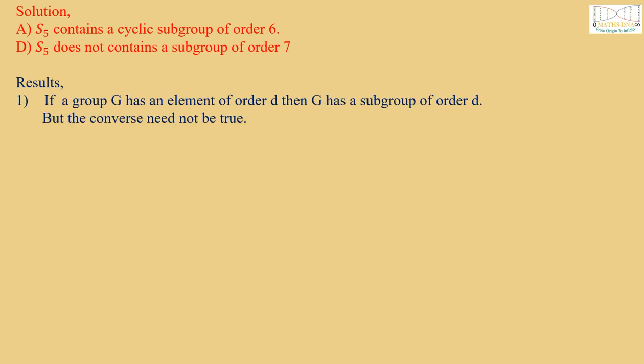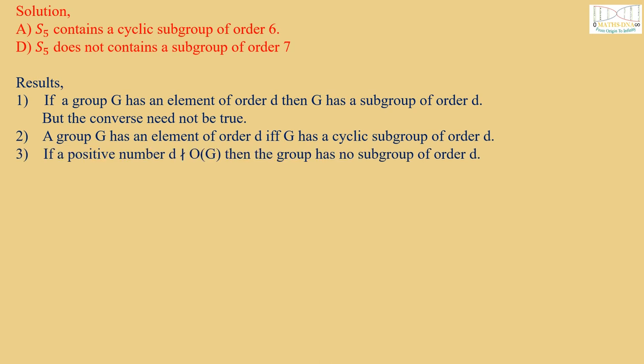First, if a group G has an element of order d, then G has a subgroup of order d, but the converse need not be true. Second, a group G has an element of order d if and only if G has a cyclic subgroup of order d. Third, if a positive number d does not divide order of G, then the group has no subgroup of order d.